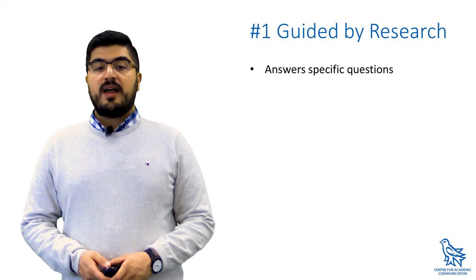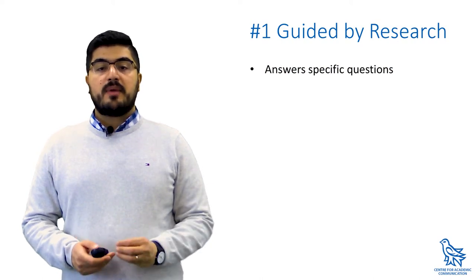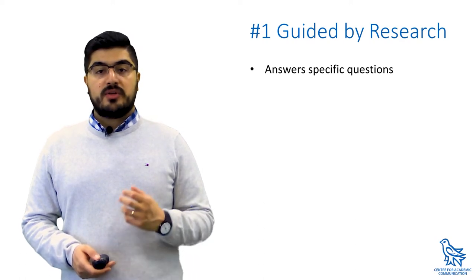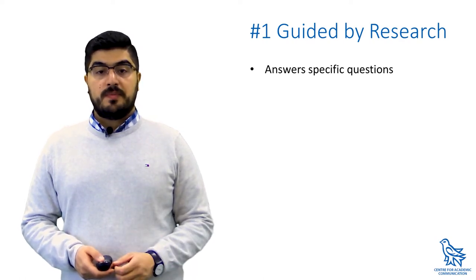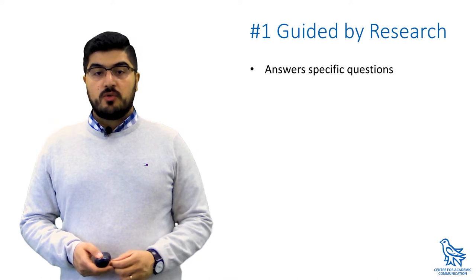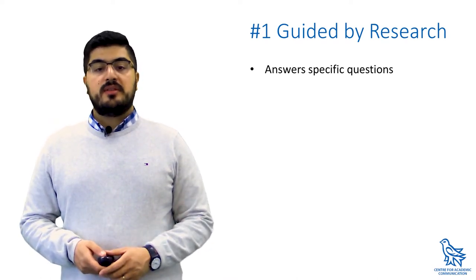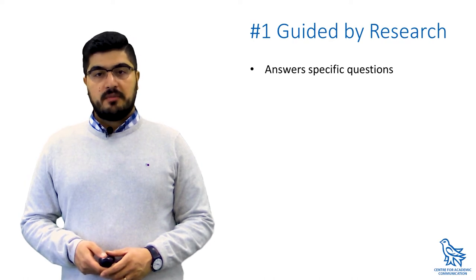The first important quality of academic writing is that it's guided by research. In other words, any piece of academic writing must attempt to answer specific research questions. There is usually a main research question which guides your paper and a number of secondary questions that explore other aspects of the same topic.